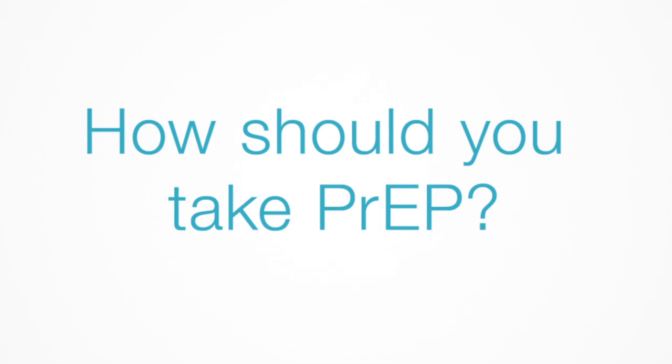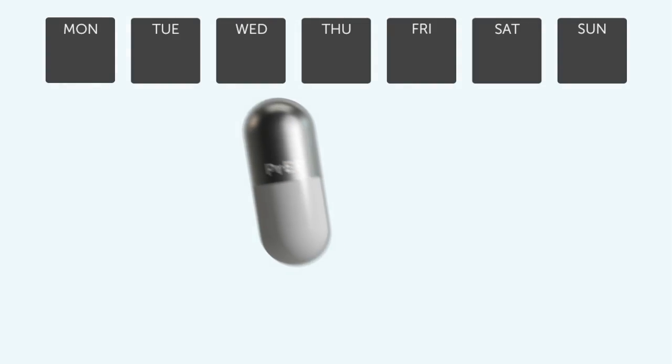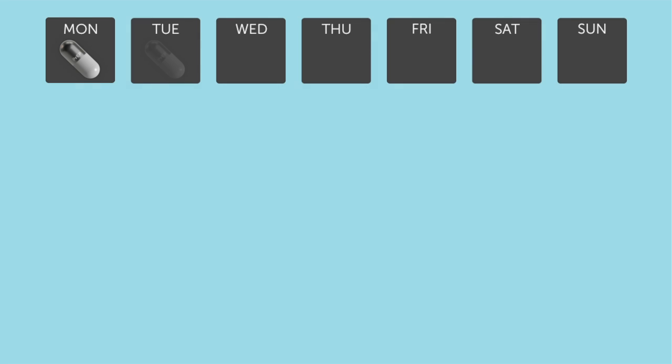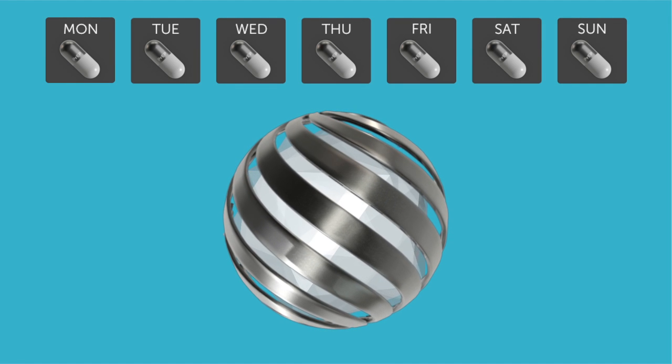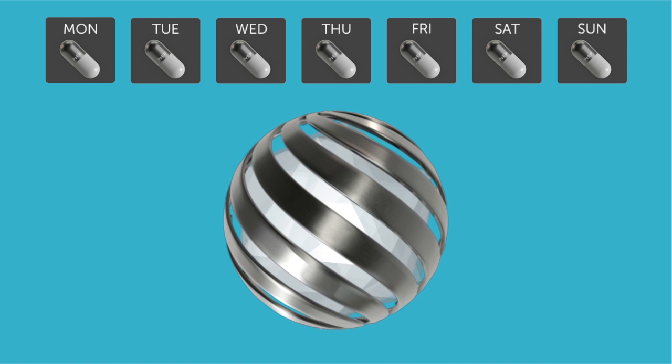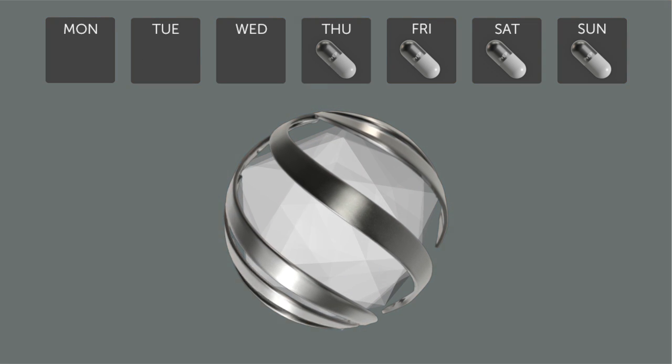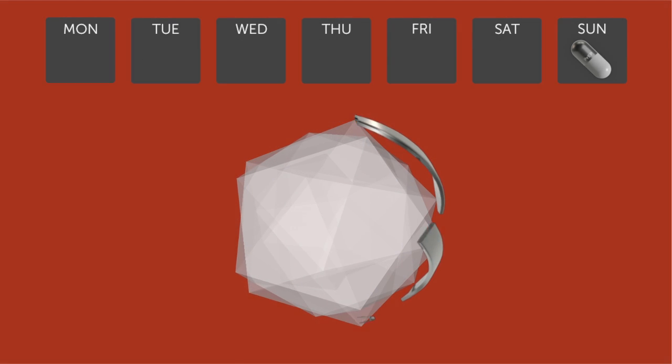How should you take PrEP? PrEP comes as a pill that you should take once every day, and it takes about a week to build up the maximum level of protection. But because PrEP is a medication that gets used up by your body, if you don't continue to take it every day, your cells will lose that protection.